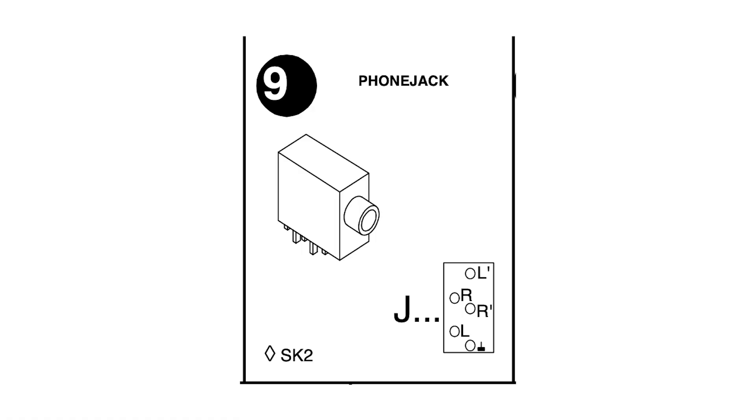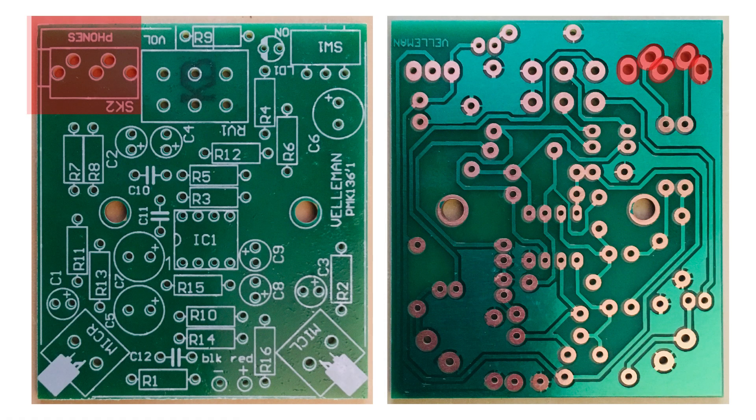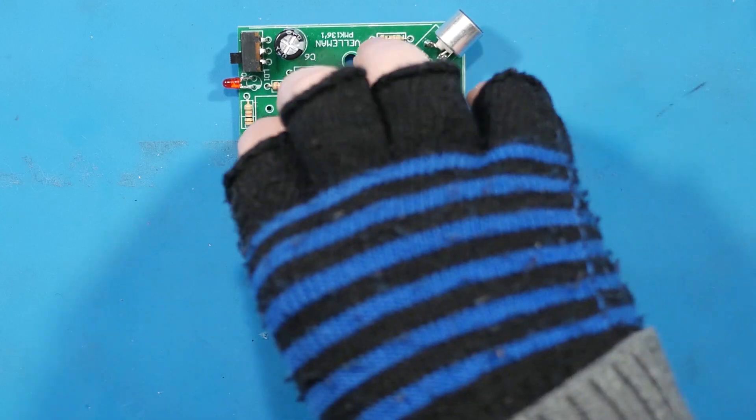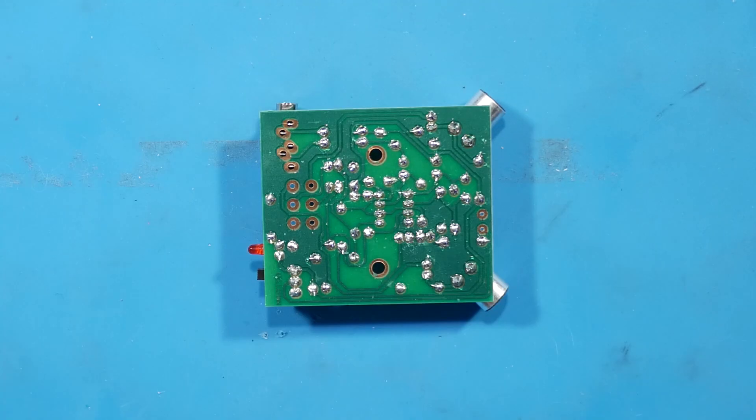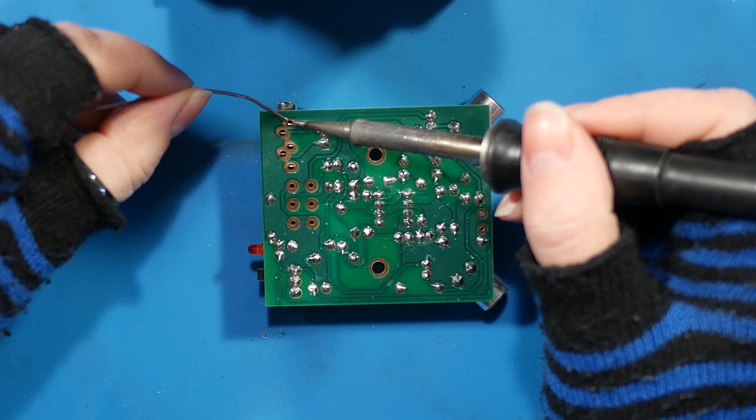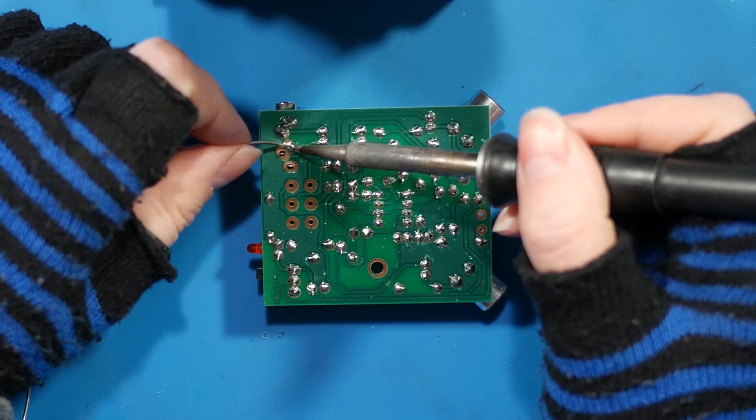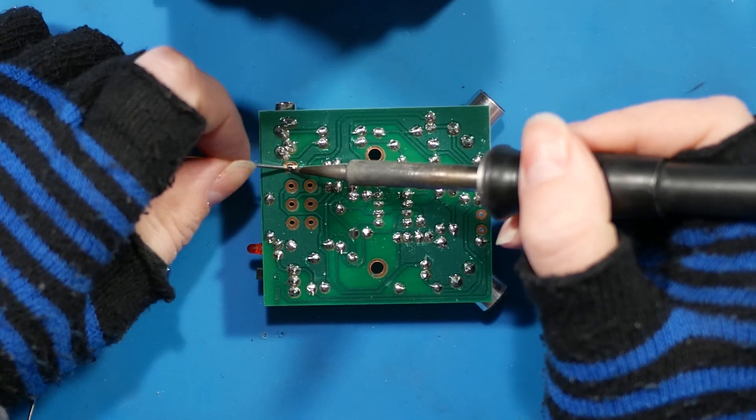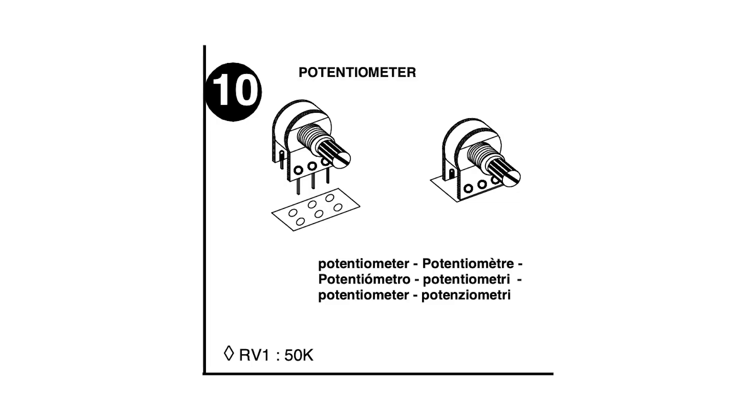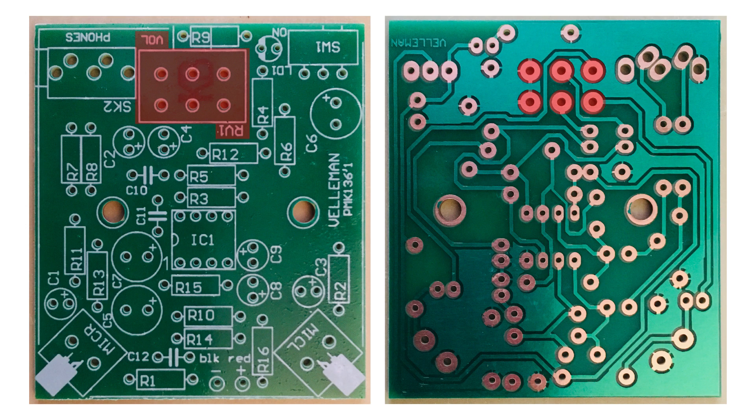Step 9 is the phone jack. It'll only fit one way, with the jack facing out. Placing it flat on the desk holds the part in place well for soldering. Step 10 is the variable resistor that will be the volume control. Place it with the knob facing out.